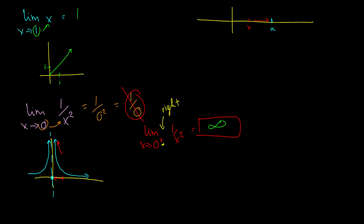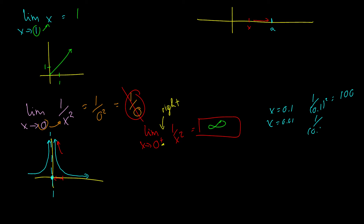Let's try some numbers close to 0. With x equals 0.1, we get 1 over 0.1 squared which equals 100. Getting even closer, x equals 0.01 gives us 10,000 — an even bigger number. So it's definitely going towards infinity from the right. But that's not enough — it has to come from both directions.